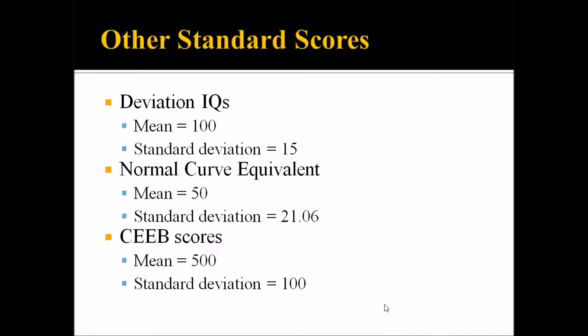The normal curve equivalent has a mean of 50 and a standard deviation of 21.06. And this particular type of standard score is, like the STA9, very popular in educational assessment. And then we have the CEEB scores. So these were originally developed by the College Entrance Examination Board, now called the Educational Testing Service. And instruments like the SAT and the GRE use the CEEB standard score, which has a range of 200 to 800, a mean of 500, and a standard deviation of 100.